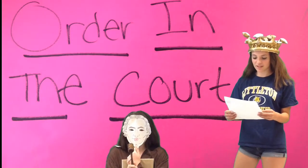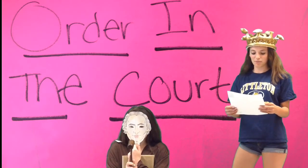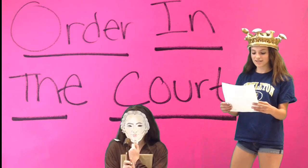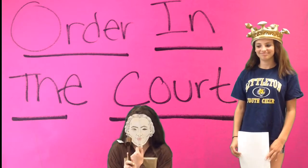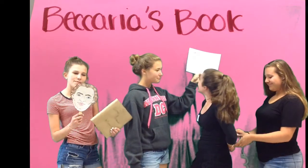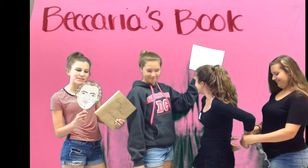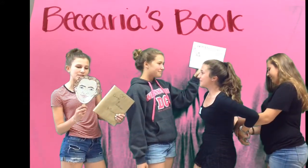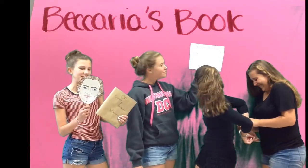Beccaria believed that the accused should get a fair trial quickly. He did not believe in the death penalty. He wrote a book on crimes and punishments that stated laws exist to establish order and security. Punishment was used to stop people from committing crimes, but punishment shouldn't be too harsh. He stated that people shouldn't be punished differently for equal crimes.